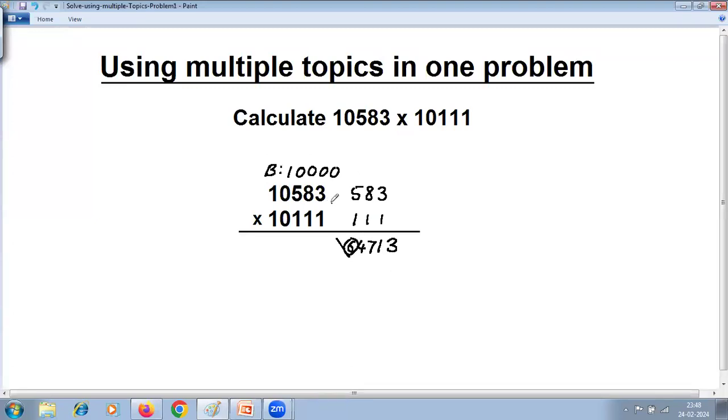Cross addition: 3 plus 1 is 4, 8 plus 1 is 9, 5 plus 1 is 6, the remaining digits remain 0 1. Then this 6 you have to add to the left.